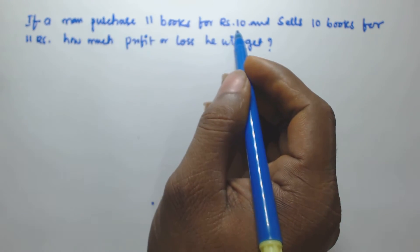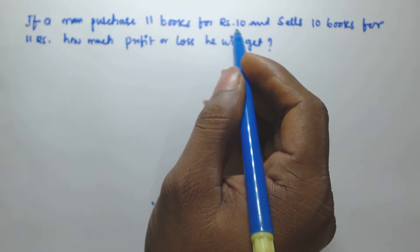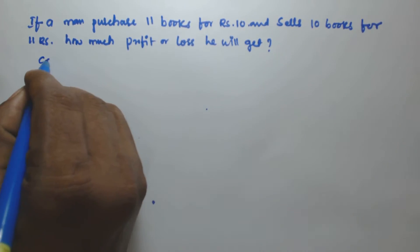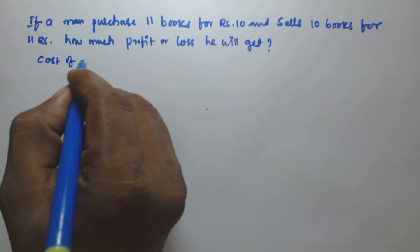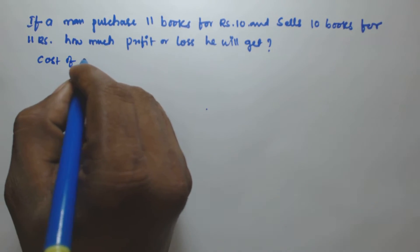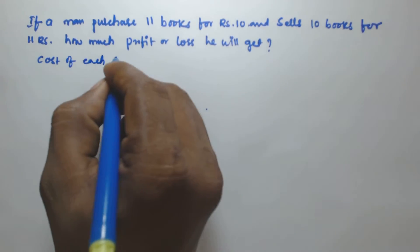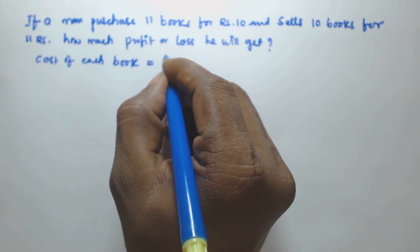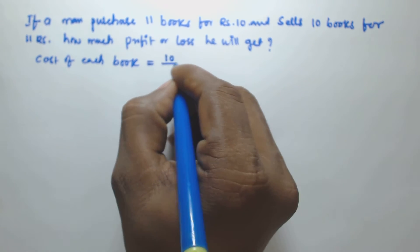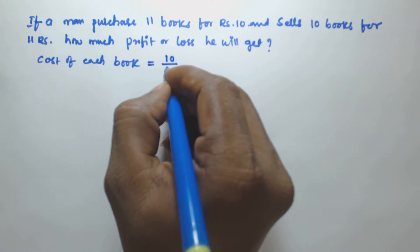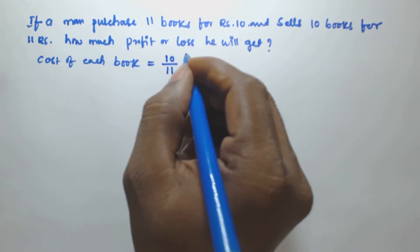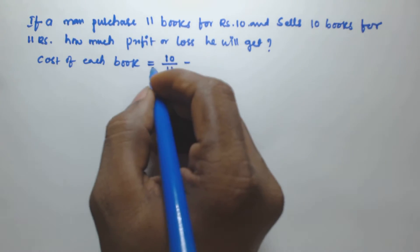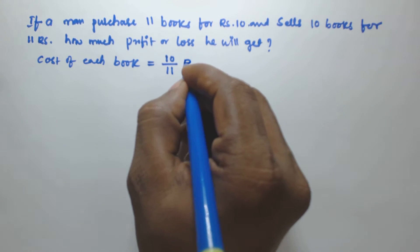It is given that a man purchases 11 books for rupees 10. So that means the cost price of each book is equal to 10 by 11, because it is 10 rupees for 11 books. So the cost price of each book is going to be 10/11 rupees per book.